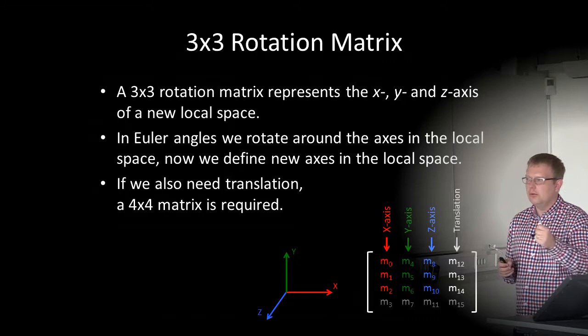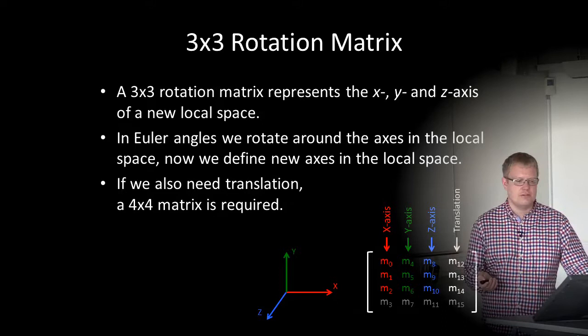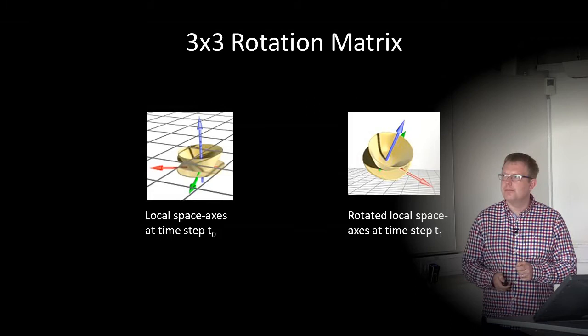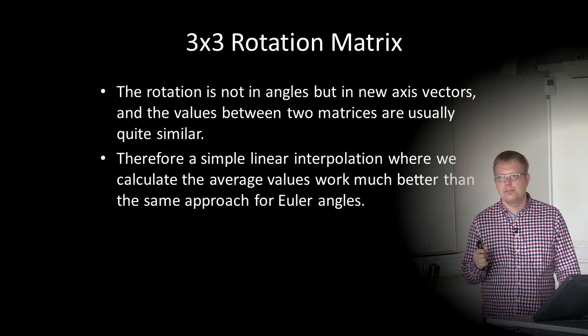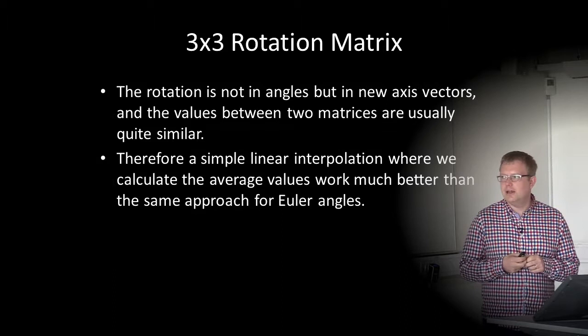If we also need translation, a 4×4 matrix is required: the first row is the X-axis, then the Y-axis, then the Z-axis, and the fourth is translation. We have a local space axis at time step t0, and we can rotate the local space axis at time step t1. The rotation is not in angles but as the new axis vector. The values between two matrices are usually quite similar since we don't move far, so a simple linear interpolation works much better than for Euler angles.